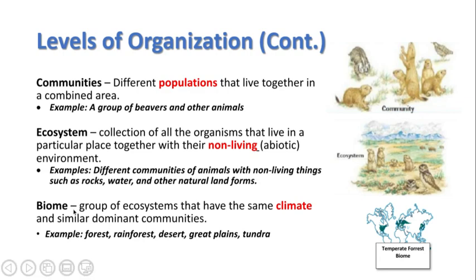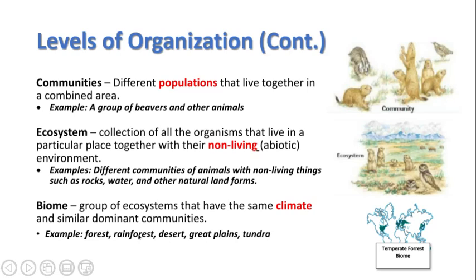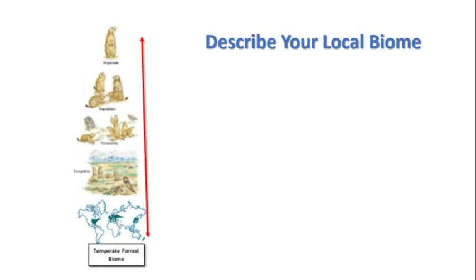A biome is a group of ecosystems that have the same climate and similar dominant communities. For example, we have the temperate forest biome, which is what we belong to here in Chicago. Trees have four seasons — they lose their leaves in the fall, lose them in winter, grow back in spring and summer, and the process starts all over again. Other biomes include the rainforest, desert, great plains, and tundra. Now on your notes, I want you to describe your local biome.